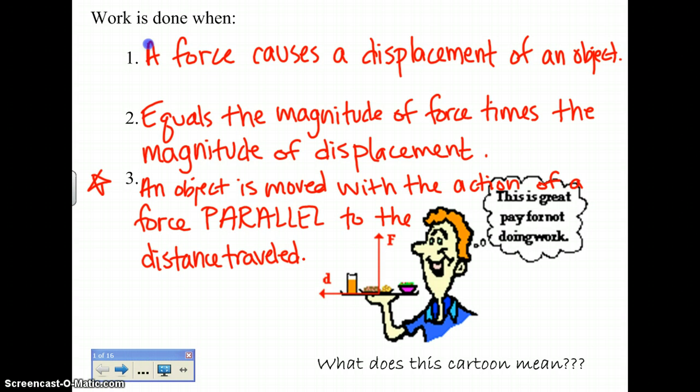Okay, so look at this little cartoon here. This server is saying, this is great pain for doing no work. So what is the physics behind this? The physics behind this is obviously he's applying a force. He's pushing up on the tray, but he's moving forward. So that's like 2D motion. That would be like a 90-degree angle that you're applying there between your distance and your force. Well, then can you say that the upward force that the server is applying on the tray is parallel to the distance traveled? No. So therefore, in the physics sense, how much work is being done? Zero.